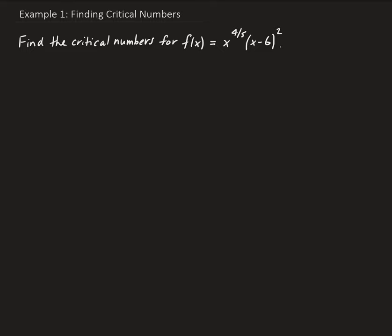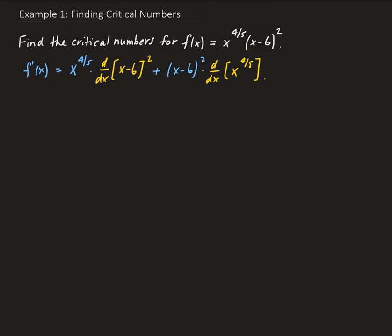First, we're going to set the derivative of this function equal to zero. So f prime of x — we're going to need to use the product rule here. We have x to the four-fifths times the derivative of (x minus 6) squared, plus (x minus 6) squared times the derivative of x to the four-fifths. That is, the first function times the derivative of the second, plus the second function times the derivative of the first.